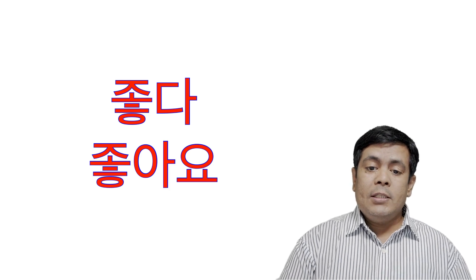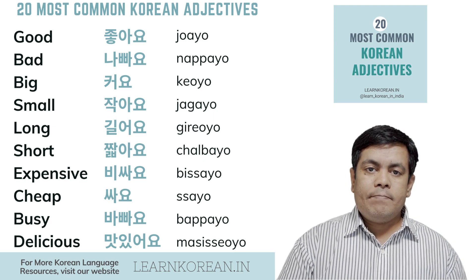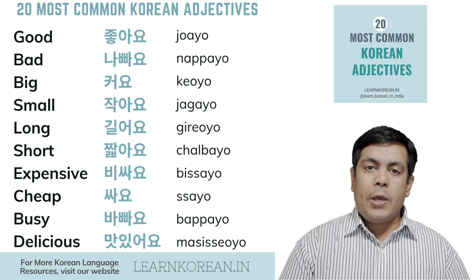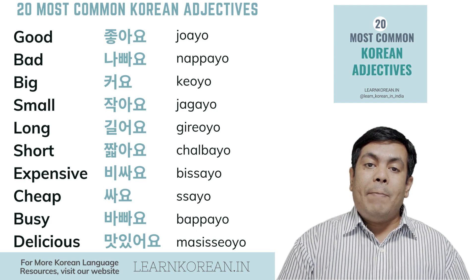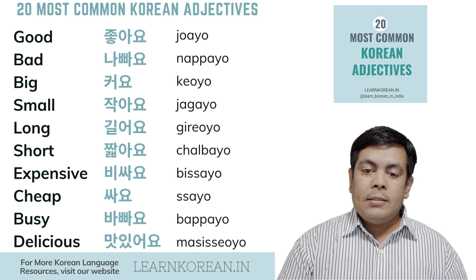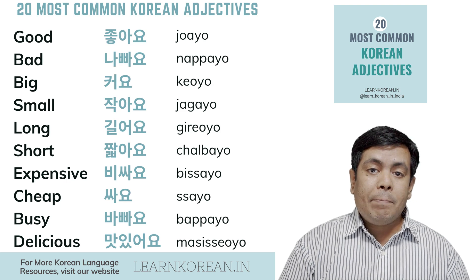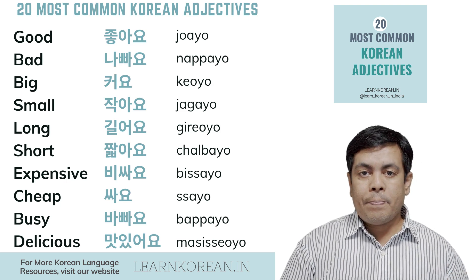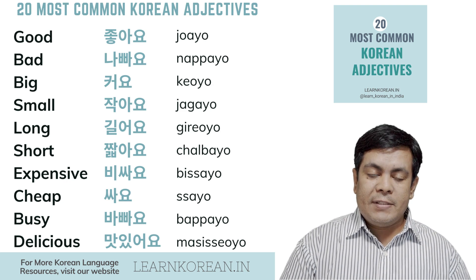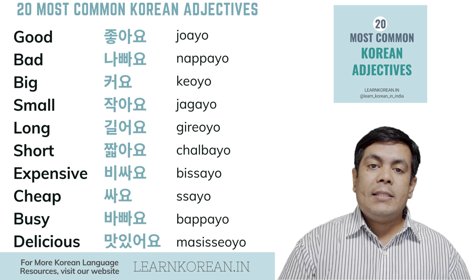The first adjective we are going to learn is 'to be good' — something is good: chowayo. The next one is 'bad': napayo.